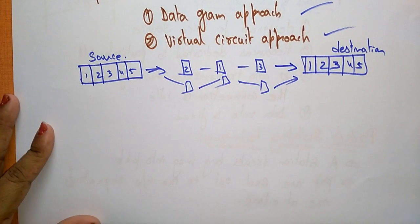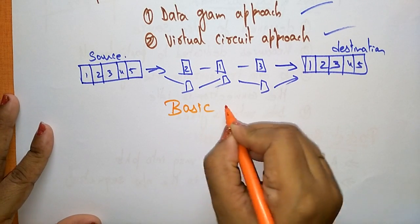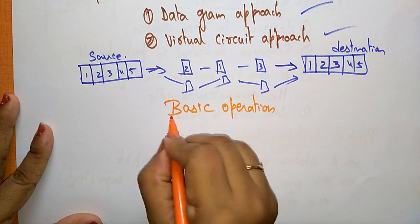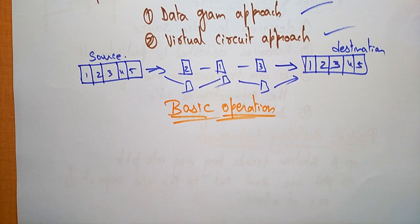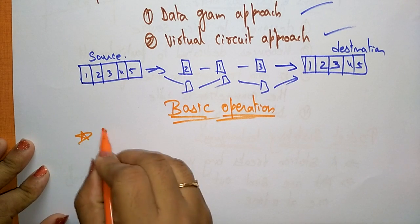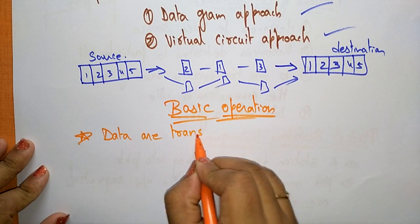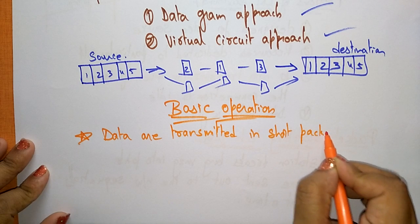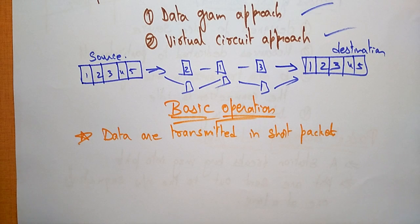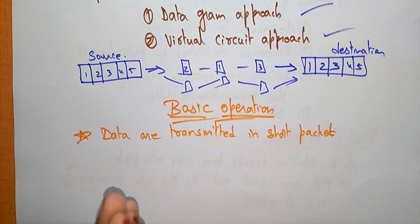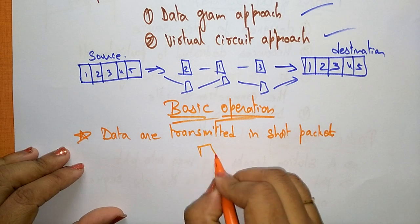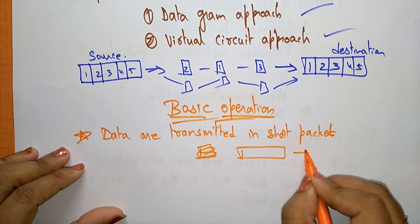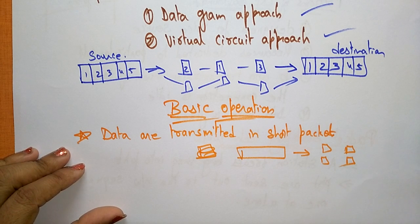Now let us see the basic operation that packet switching follows. The data is transmitted in short packets, typically on the order of 1000 bytes. A larger message is split into a series of packets. Each packet contains user data and control information.